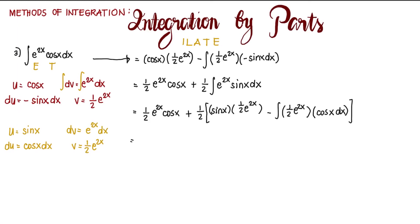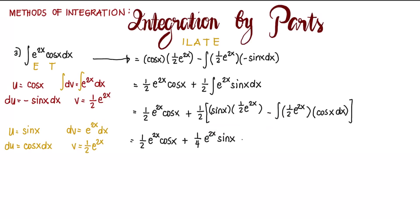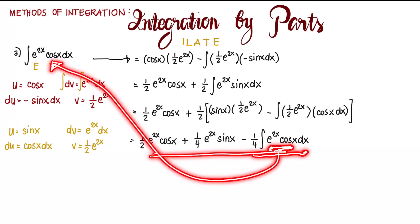We distribute 1/2: that gives 1/2 e to the power of 2x cosine x, plus 1/4 e to the power of 2x sine x. Then take note there is a 1/2 here which we multiply to the 1/2 here, and there is a negative sign — so minus 1/4 integral of e to the power of 2x cosine x dx. Note that this entire expression is equal to the original integral of e to the power of 2x cosine x dx, so they are the same.